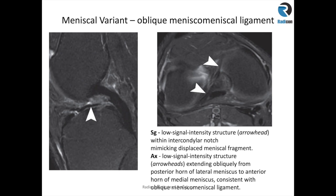The oblique meniscomeniscal ligament runs between the posterior horn of the lateral meniscus to the anterior horn of the medial meniscus. It can be seen on axial sequence, pointed by the arrowheads, or on sagittal sequence in the midline as a low signal intensity structure.